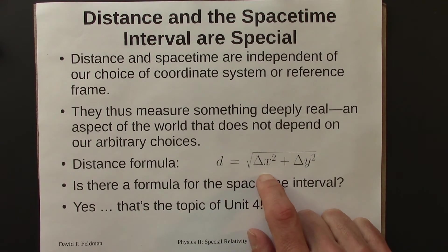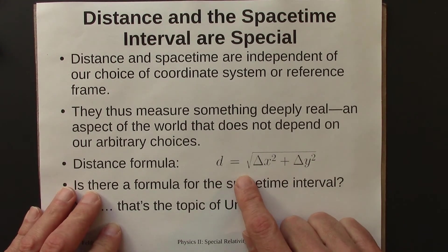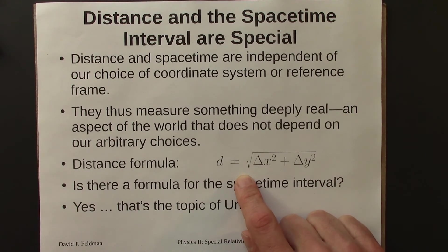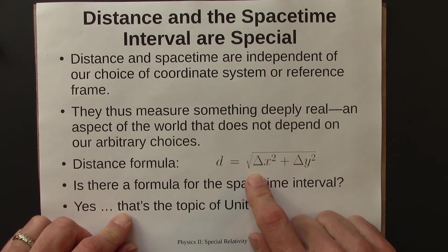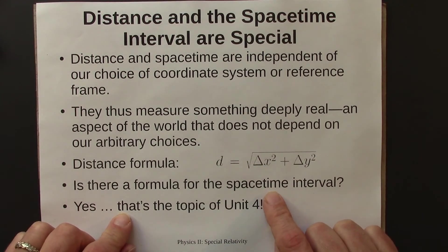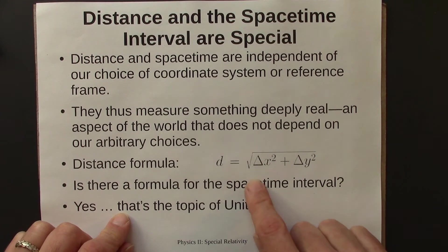We can think of this as the Pythagorean theorem, but more importantly, this formula tells us how to measure distance and enables us to do geometry. Is there a similar formula for the space-time interval? The answer is yes, but it turns out it's not exactly what you'd expect — it's not simply the square root of delta x squared plus delta t squared. Figuring out the formula for the space-time interval will be the topic of Unit 4. That formula is known as the metric equation, and we'll see that the metric equation is the key to understanding the geometry of space-time.